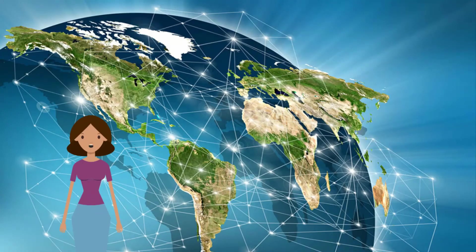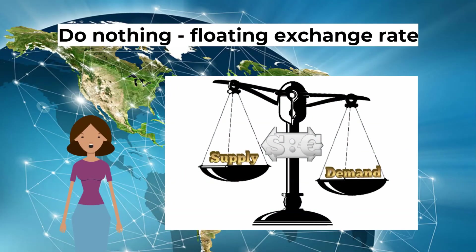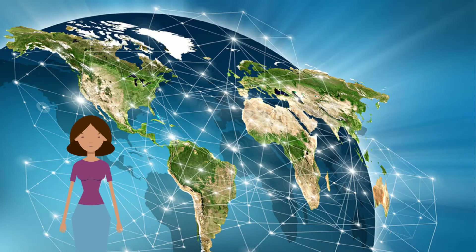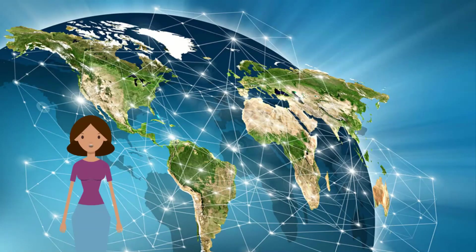How do we correct a current account surplus? Do nothing — because a floating exchange rate should correct it. If there is a trade surplus, an appreciation will occur as more currency is being demanded. An appreciation will make imports cheaper and exports more expensive, so foreign demand for exports will fall and domestic demand for imports will rise, reducing the trade surplus.